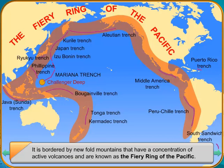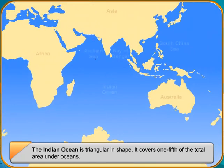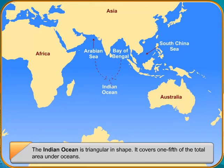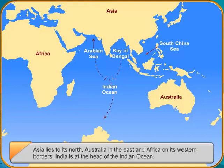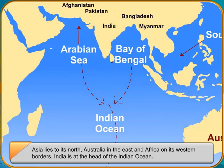Indian Ocean. The Indian Ocean is triangular in shape. It covers one-fifth of the total area under oceans. Asia lies to its north, Australia in the east, and Africa on its western borders. India is at the head of the Indian Ocean.